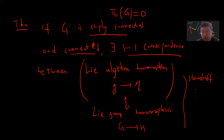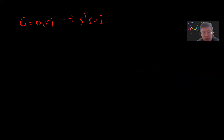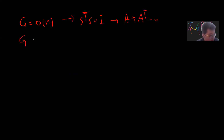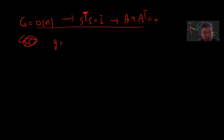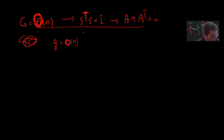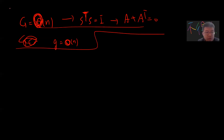As an example, if you have the orthogonal group where S^T S equals the identity, the Lie algebra consists of antisymmetric matrices. The Lie group is denoted by a capital O, while the Lie algebra is denoted by a lowercase o.